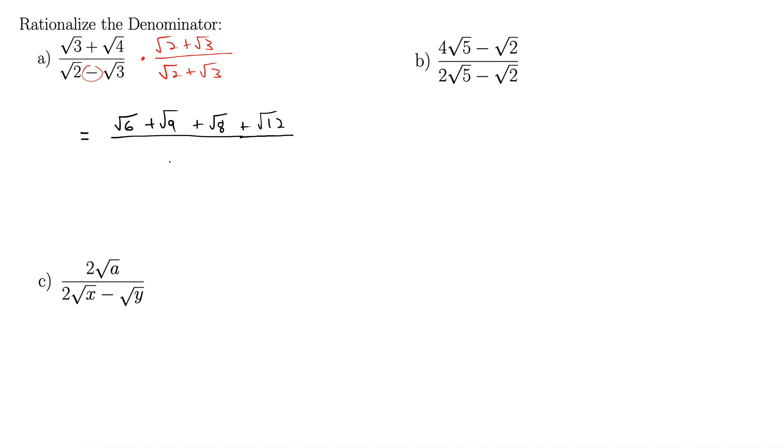But let's go down to the bottom here into the denominator. First, rad 2 times rad 2, rad 4. Outside, plus rad 3 times rad 2, rad 6. Inside, minus rad 3 times rad 2, rad 6. And last, minus rad 3 times rad 3, so minus rad 9. If you've done this correctly, these should always cancel out. These inside radicals will cancel out.